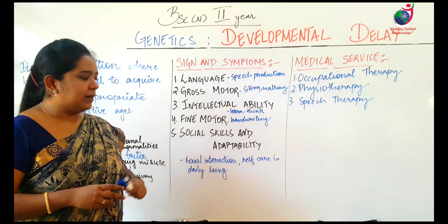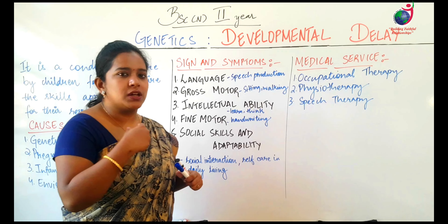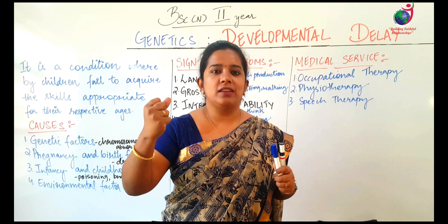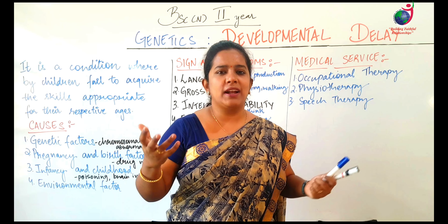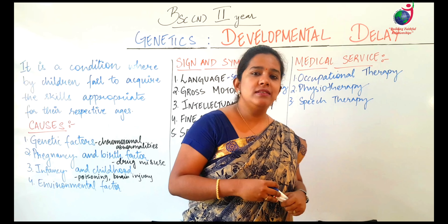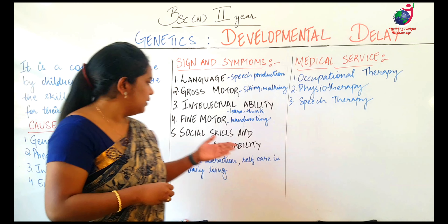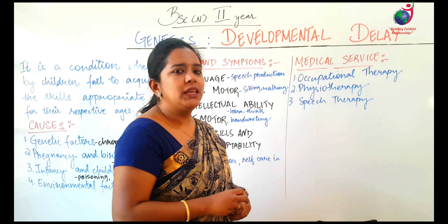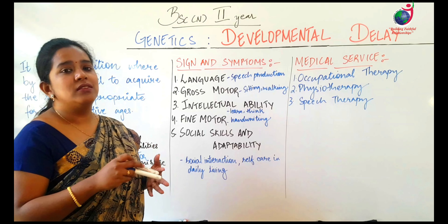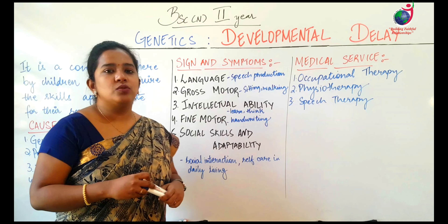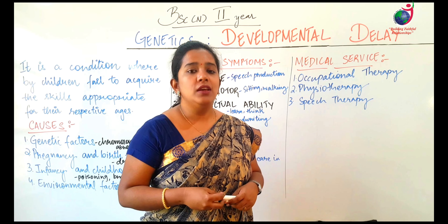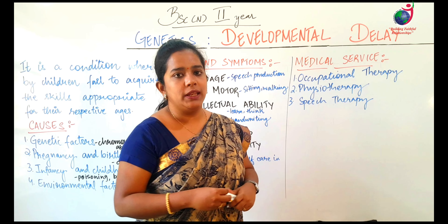Social skills and adaptability means social interaction — things like being able to use a washroom, change clothes, talk, play, or interact with people. These come under social interaction and adaptability. So language, motor skills — fine and gross — intellectual skills, and social skills may all be affected because of developmental delay.